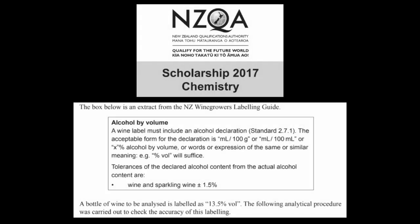Hi, everyone. In this week's scholarship chemistry tutorial session, I'm taking up question 4A from the 2017 exam. This is a really neat question where we are determining the amount of ethanol in a bottle of wine and comparing it to the amount claimed on the label. It's supposed to contain around 13.5% ethanol by volume, plus or minus 1.5% units, so anywhere between 12 to 15% ethanol.